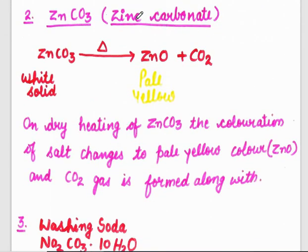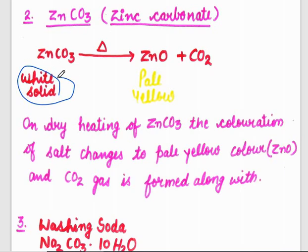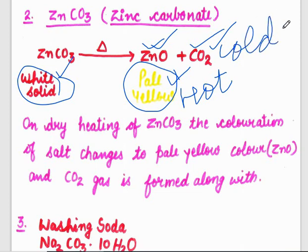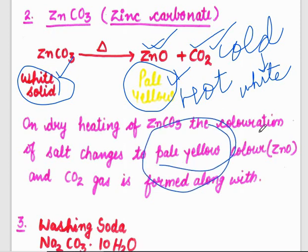Next is zinc carbonate, which is a white color solid substance. On heating, it is converted into zinc oxide plus CO2 is released. Zinc oxide is a pale yellow color substance when hot, but when it becomes cold it is again converted into a white solid substance. So on dry heating of zinc carbonate, the color changes to pale yellow ZnO and CO2 gas is also released.